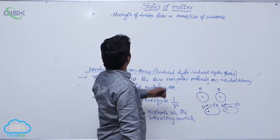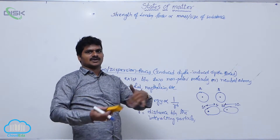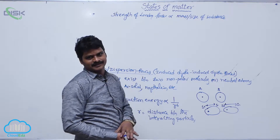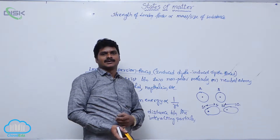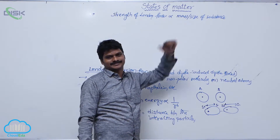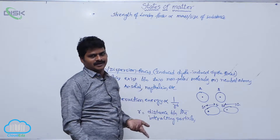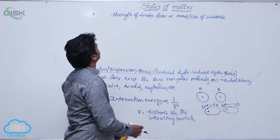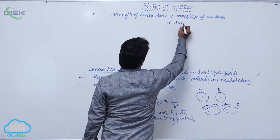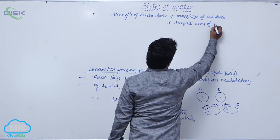For example, when you take iodine and bromine: iodine is initially solid but bromine is liquid. When bromine is solidified, London forces also exist there. The strength of London force is more in iodine because it has more size — that's why iodine exists as a solid, but bromine, having a smaller size, exists as a liquid. So the strength of London force is directly proportional to the surface area of the molecule.